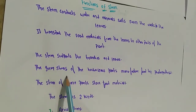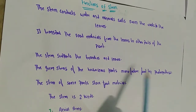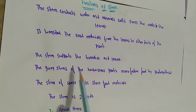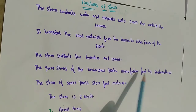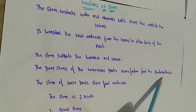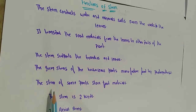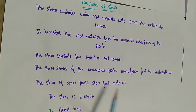The green stems of herbaceous plants manufacture food by photosynthesis. Herbaceous plants are vascular plants that have no woody stem above ground. The food is prepared using sunlight, which is why the process is called photosynthesis. The stem of some plants also stores food materials.